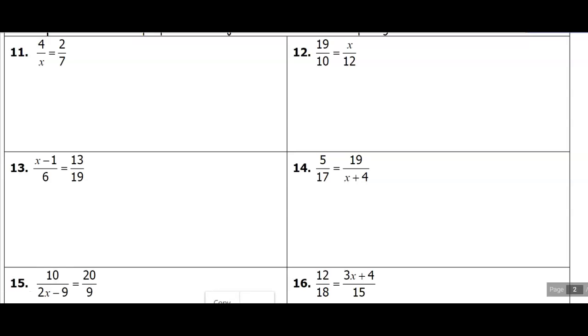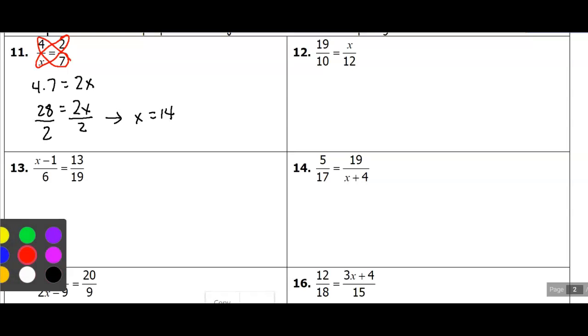Let's take a look at number 11. I'm just going to circle my cross products here. So I have 4 times 7 is equal to x times 2. So we normally just write that as 2x. So I've got 28 is equal to 2x. I'll divide both sides by 2. And I get that x is equal to 14.